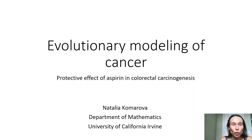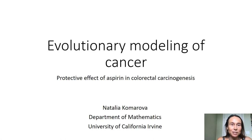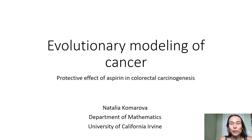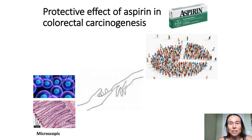Hello, my name is Natalia Komaroba and I'm a professor of mathematics at the University of California, Irvine. My main interest is evolution and I spend a lot of time studying cancer because it's an example of an evolutionary process that is very useful to understand. Today I will present some recent work about the protective effect of aspirin in colorectal carcinogenesis.